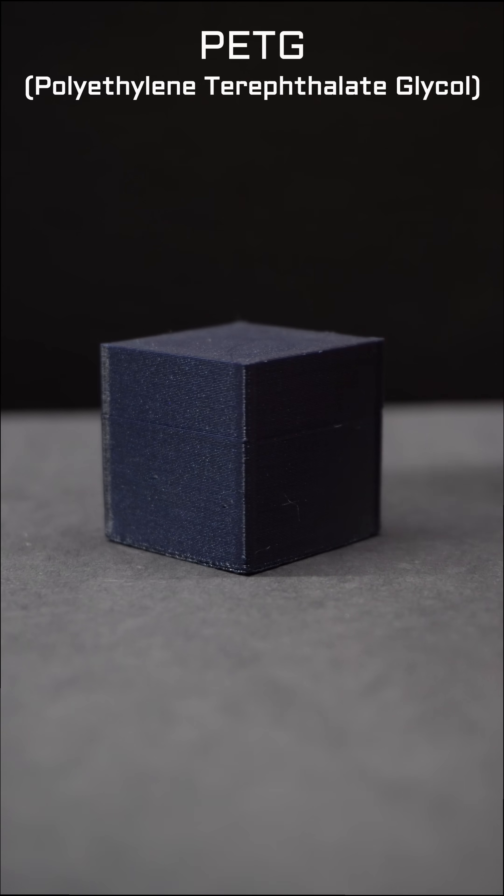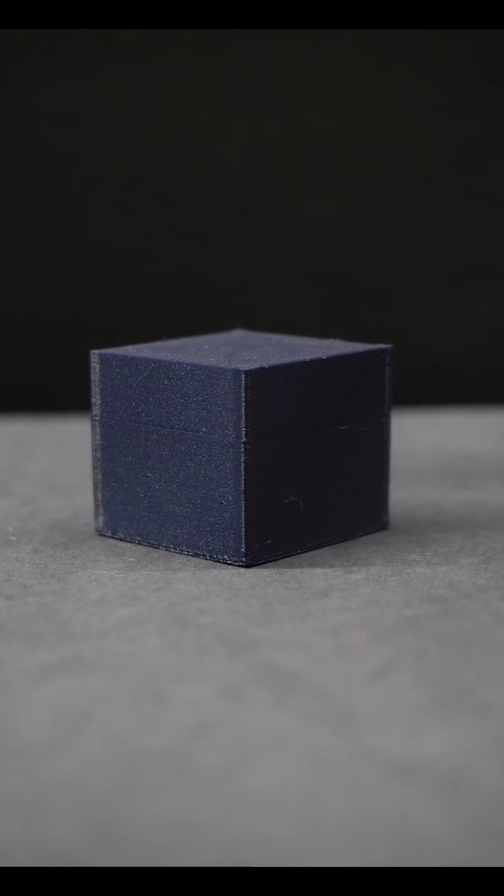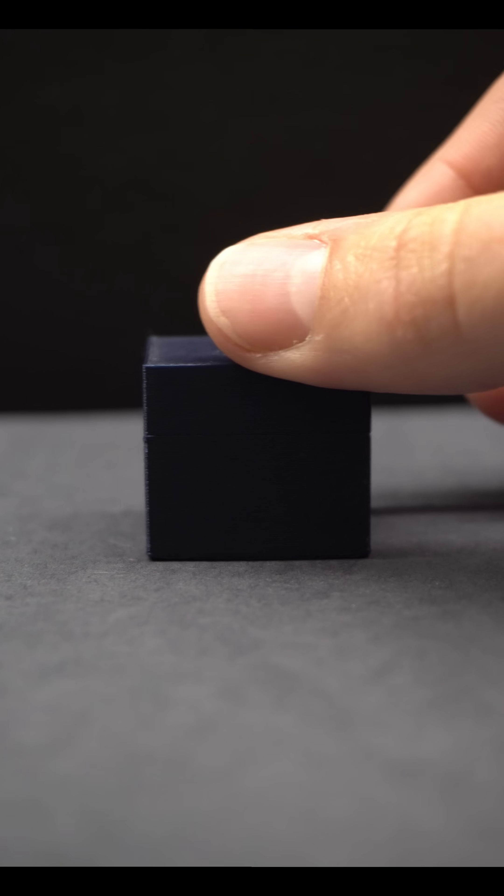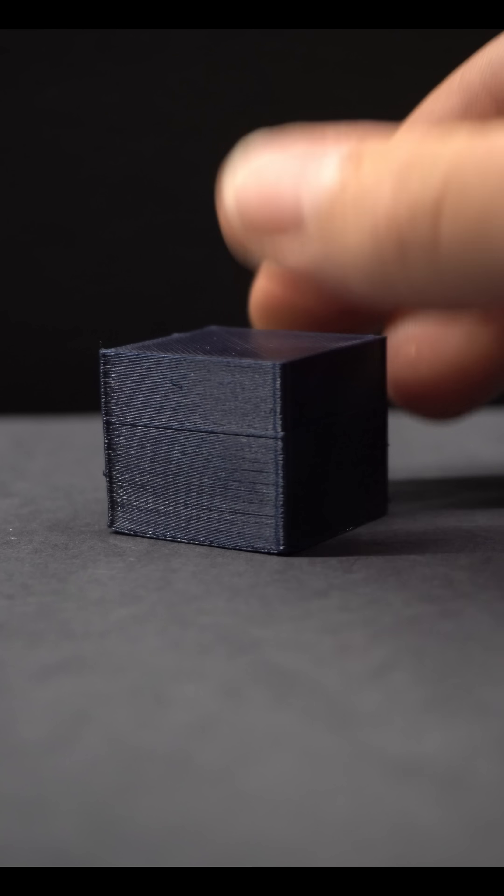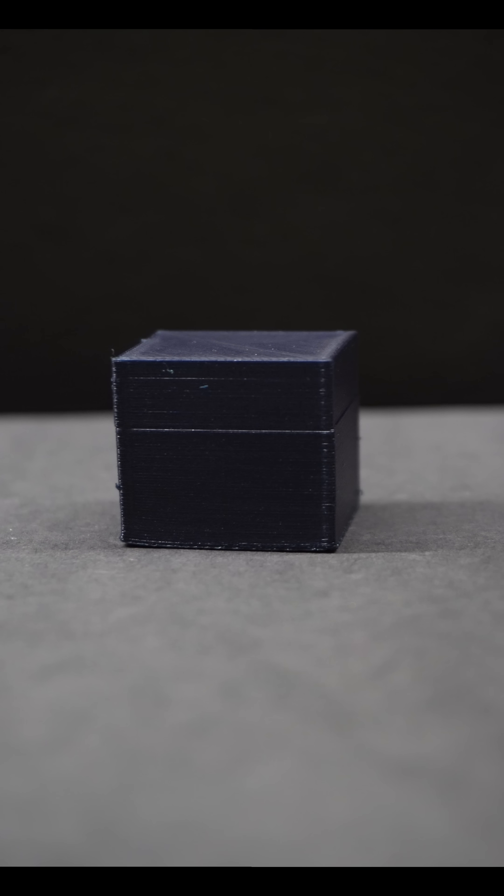Then there's PETG, polyethylene terephthalate glycol. This is like PLA but strong. Has a higher melting point and is more resistant to sunlight. Although it has slightly more toxic fumes than PLA but less toxic fumes than ABS. I don't use this material myself.